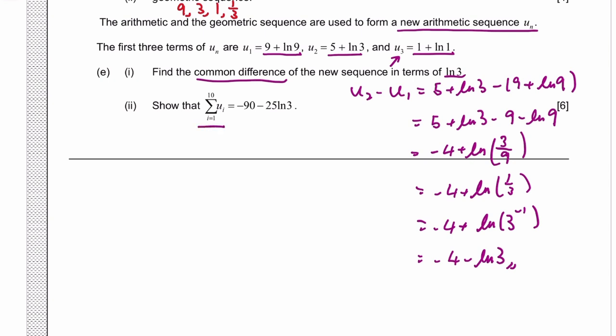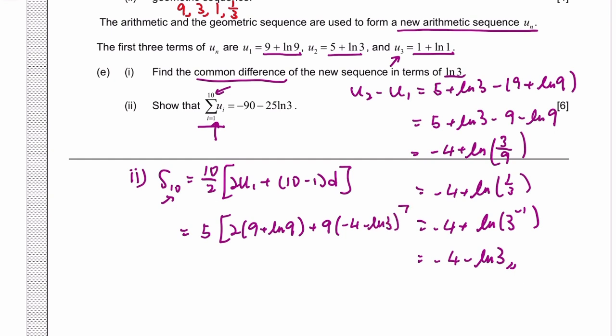So the sum is the summation of the term from the first term to the tenth term. So that's S10. So we can use the summation formula, which is N over 2, N being 10 now, times 2U1 plus N minus 1 times D. Again, N is 10. So 10 over 2 is 5, times 2 times U1 plus 9 times D. D is what we just found.